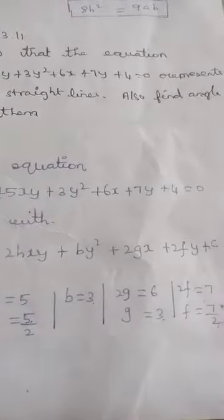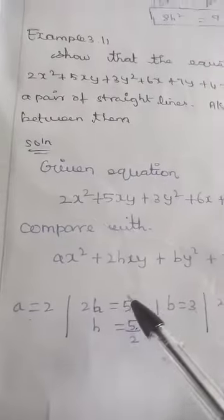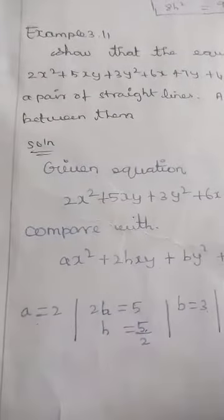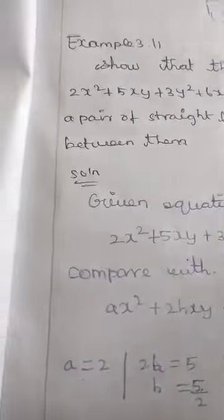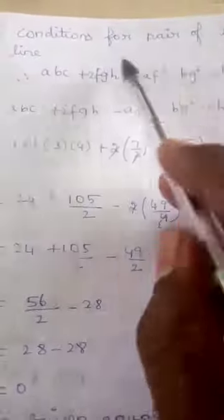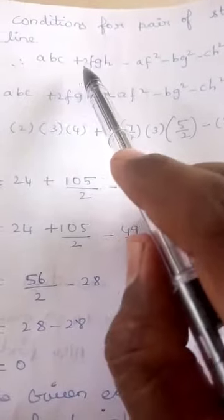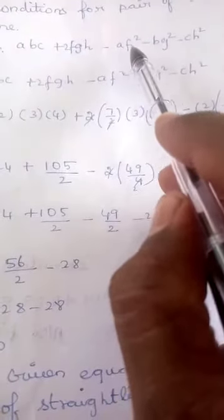The condition for a pair of straight lines is: abc + 2fgh - af² - bg² - ch² = 0. Let me verify this formula.